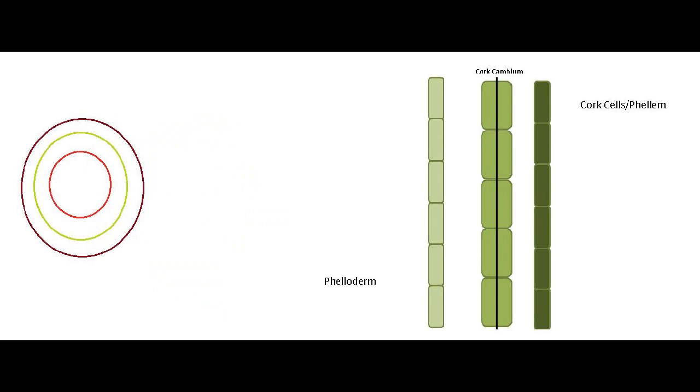The dark green middle layer you see is the cork cambium which undergoes periclinal division and forms phelloderm on the inside, which stays living. On the outer side you see the cork cells or phellem. I have made them dark because they die at maturity and suberin deposition occurs. This makes them impervious to water and this is the reason the cork floats in water, the one which is on wine bottles.